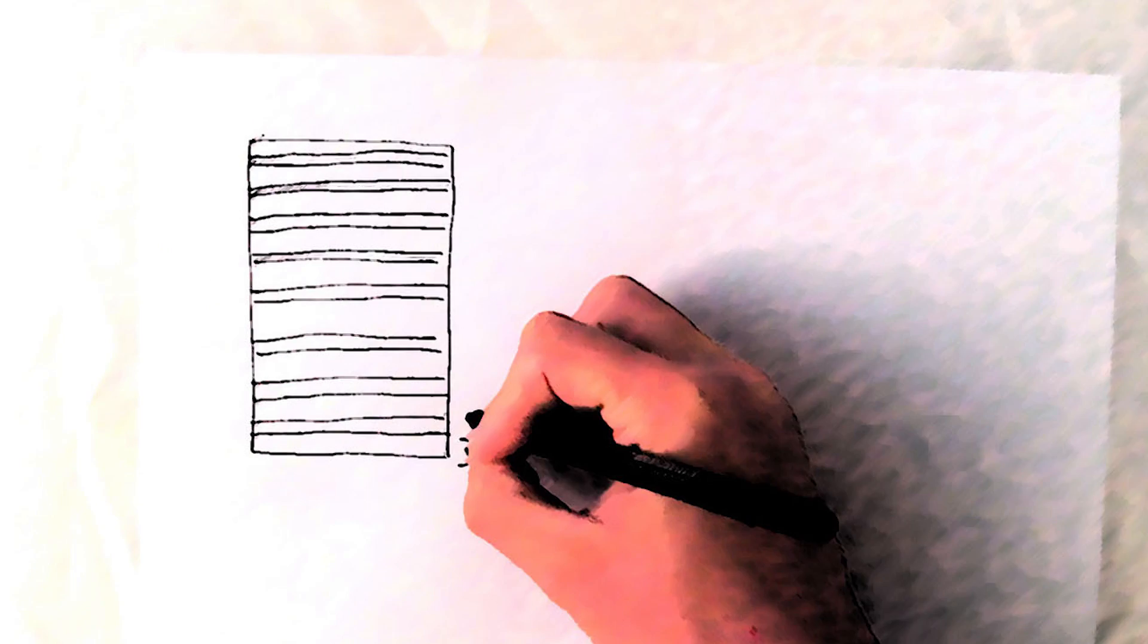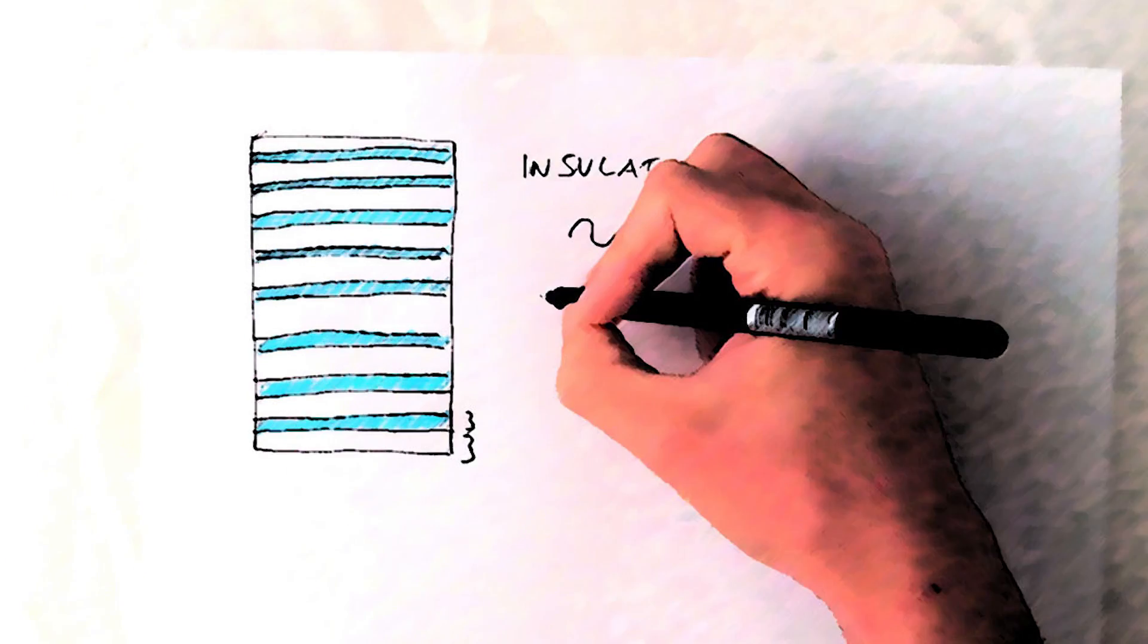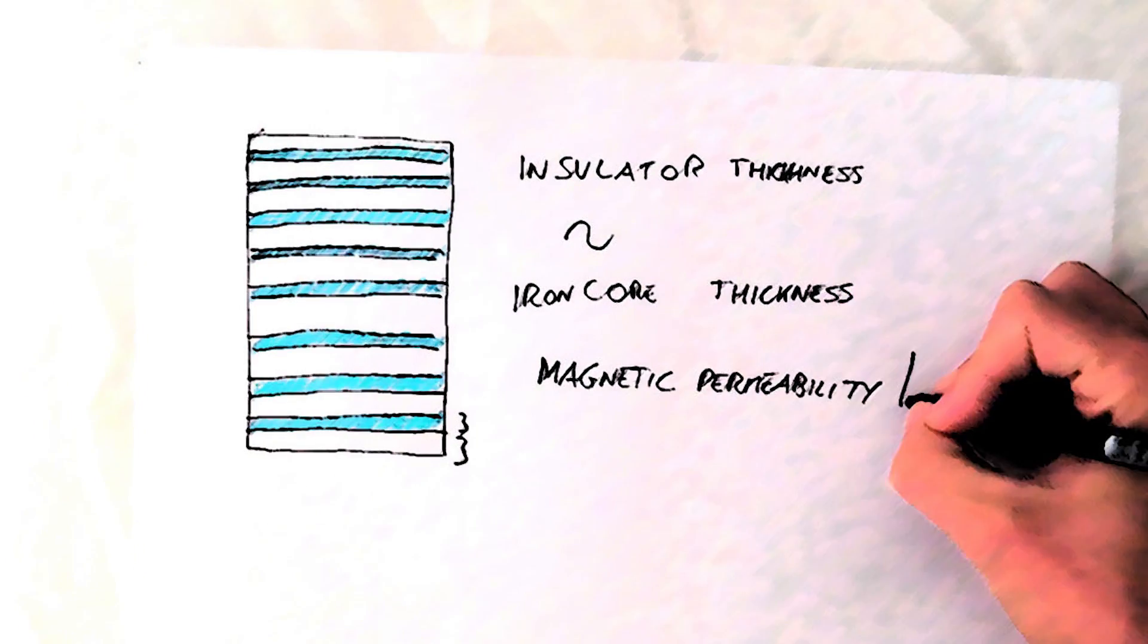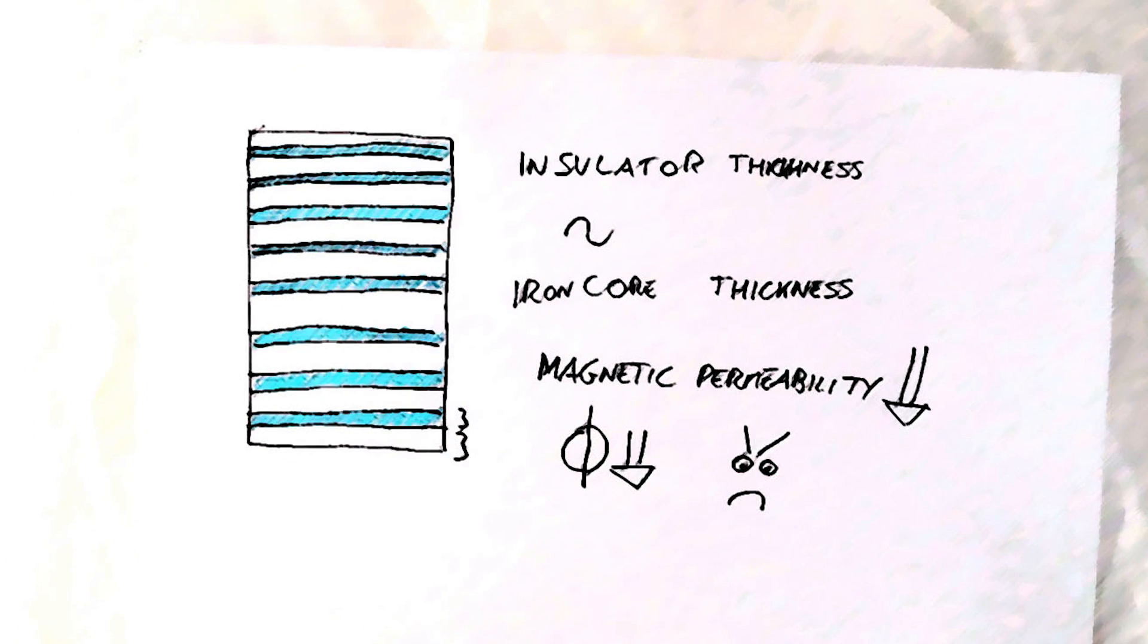Shrinking down the laminations brings another problem. As we increase the number of laminations, we have less iron and more insulator, which is not a good magnetic field conductor. In a future video we'll see what can be done here to improve motor performance.